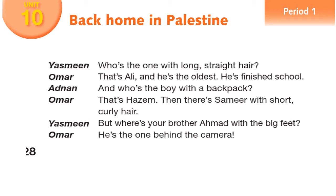'Who's the one with long straight hair?' 'That's Ali — and he is the oldest; he's finished school.' 'And who's the boy with the backpack?' 'That's Hazem. Then there is Samir with short curly hair.' 'But where is your brother Ahmad with the big feet?' 'He's the one behind the camera.'